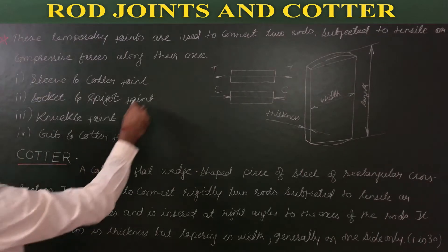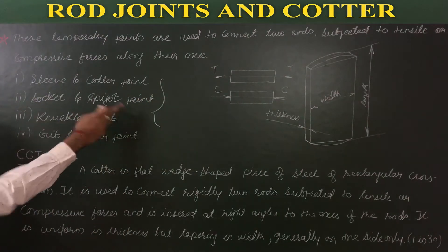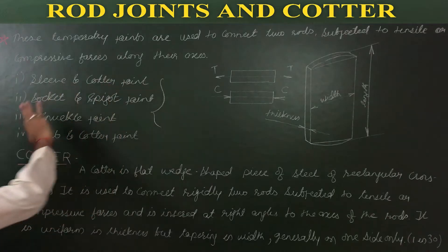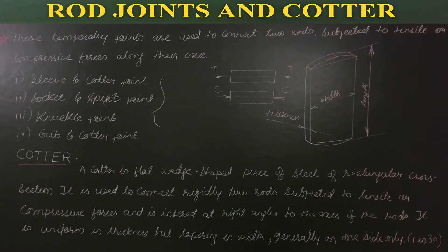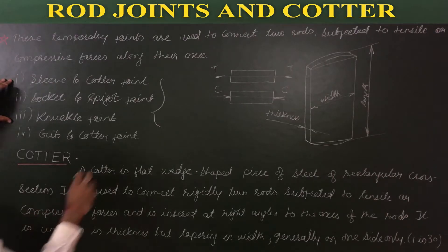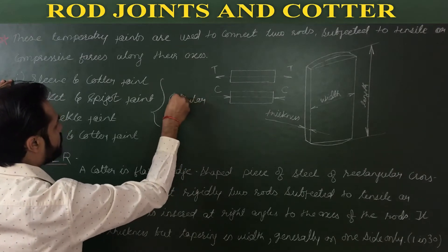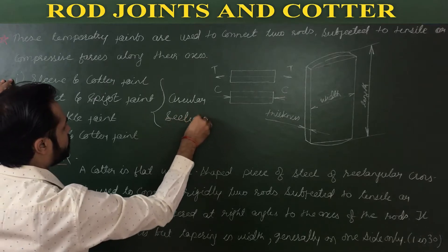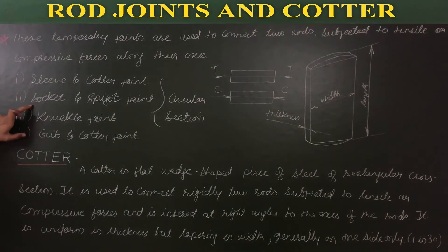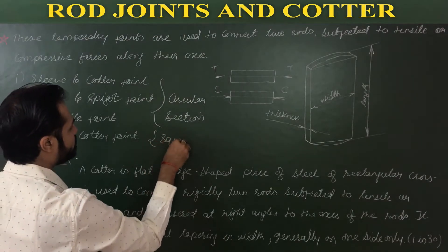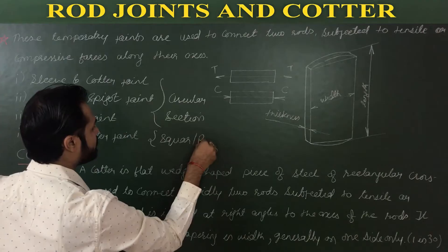In the first, second, and third cases — sleeve and cotter, socket and spigot, and knuckle joint — the cross-sectional area of the rod is circular. But in the gib and cotter joint, the cross-sectional area is square or rectangular.